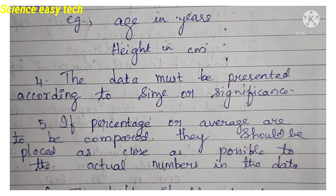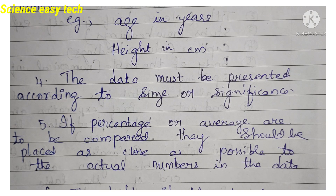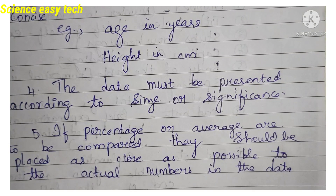Fifth point: if percentages or averages are to be compared, they should be placed as close as possible to the actual numbers in the data — represented side by side for easy understanding. For example, if you collected 100 samples and males are 40 and females are 60, then the numbers 40 and 60 and their percentages, 40% and 60%, should be represented side by side for better clarity.